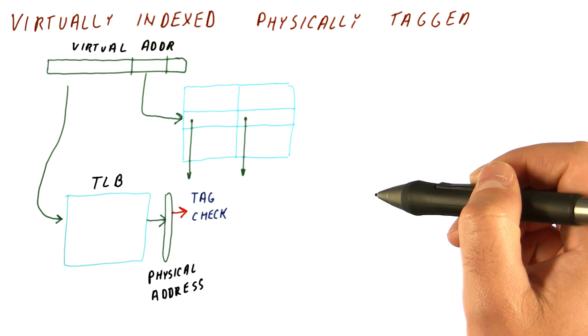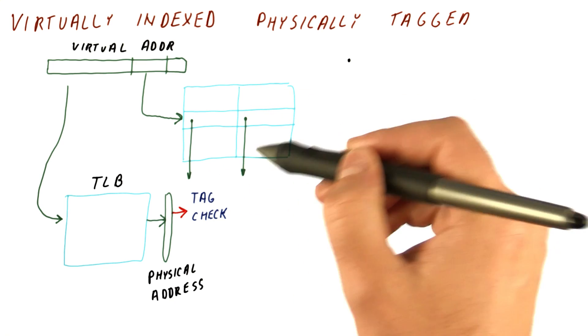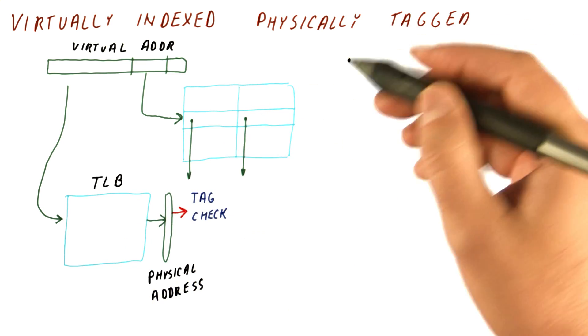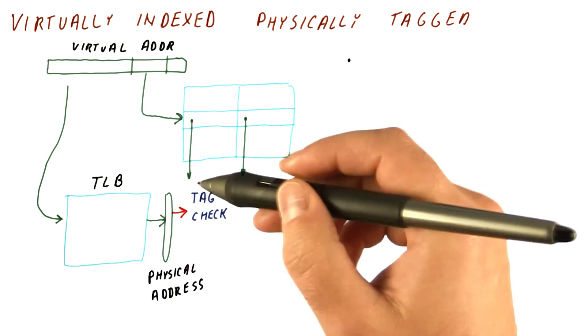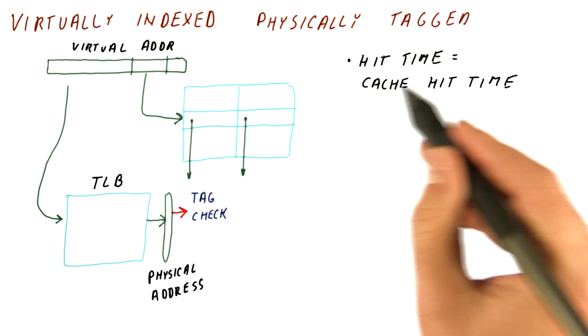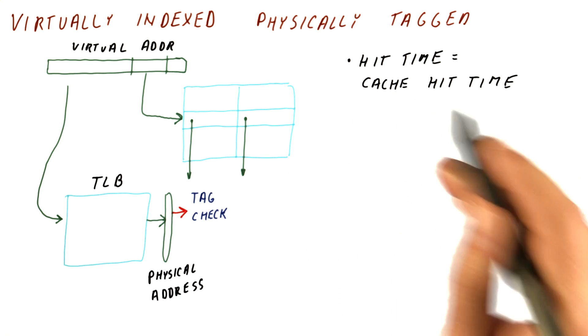We know whether we have a hit and so on. So how does this help? Note that the cache array and the TLB access are proceeding in parallel. So if the TLB is fast enough, and usually it is because it's small, the hit time will be equal to the cache hit time. It's actually the maximum of the two, which is usually the cache hit time.